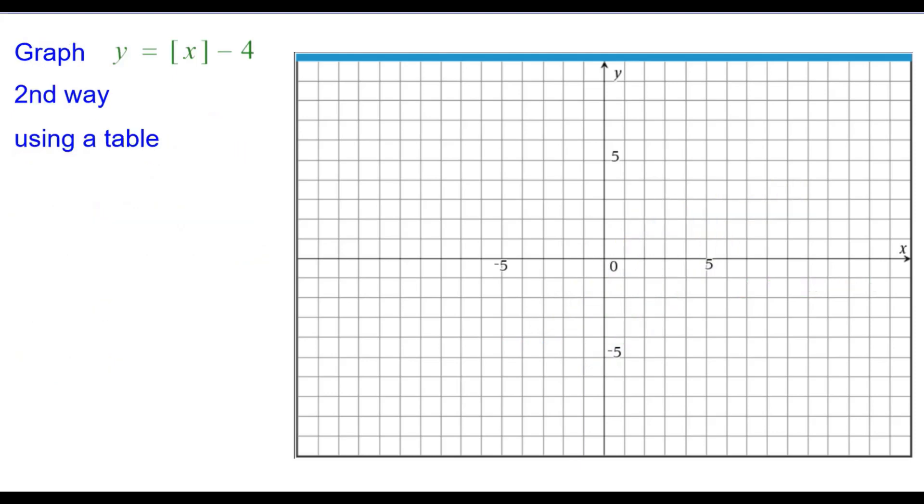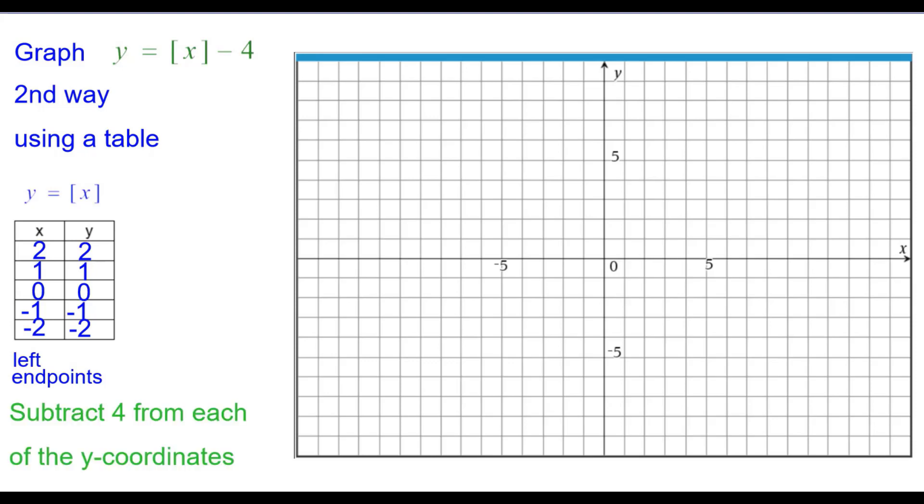The second way is using a table. We'll start off with the greatest integer of x, and we're just going to look at the left endpoints because then we know how to make the step from that. We're going to subtract 4 from each of the y-coordinates.